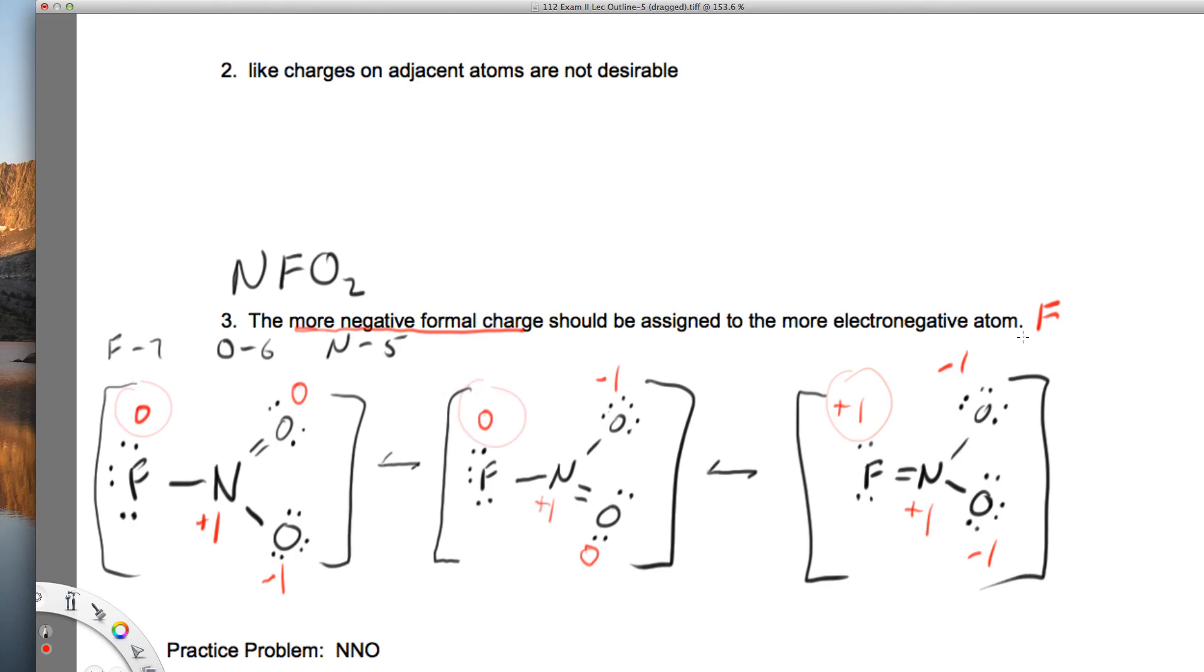This third structure breaks two rules. It's got the same charge on adjacent atoms, and the most electronegative atom is not the most negative. Whereas over here, zero is at least more negative than plus one. These two are equivalent. They're equivalent resonance structures, so they would be equal in importance.